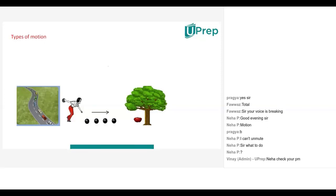Now, types of motion. Do you know how many types of motion are there in our daily life generally? There is circular motion, translatory motion, linear motion, random motion, oscillatory motion, and rotatory motion.